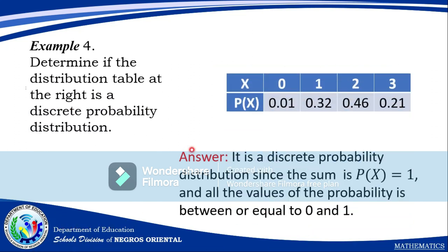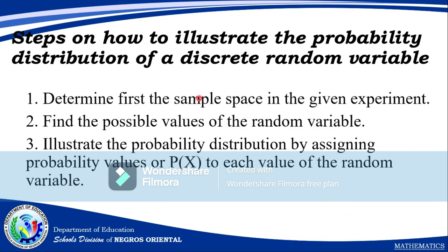Example 4: X = {0, 1, 2, 3} and P(X) = {0.01, 0.32, 0.46, 0.21}. Adding all gives 1. Therefore, it IS a discrete probability distribution since ΣP(X) = 1 and all probability values are between 0 and 1.